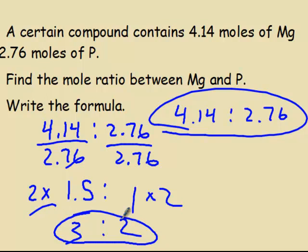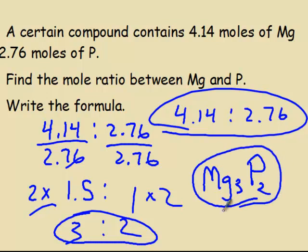So now we're going to go a step further, and we're going to write something called an empirical formula. So it says find the mole ratio between magnesium and phosphorus. Well, it's a 3 to 2 ratio. And then write the formula. The formula then is going to be Mg3P2. So a 3 to 2 mole ratio is shown in the formula but with those subscripts.